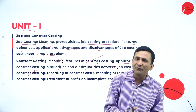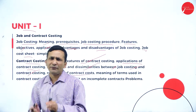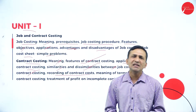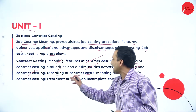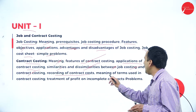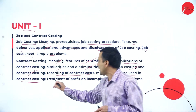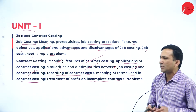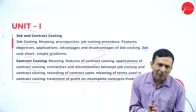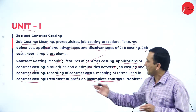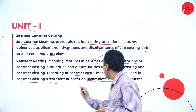The meaning and features of contract costing will be covered, its applications, and the similarities and dissimilarities between job costing and contract costing. Recording of contract costs is important for two-year, three-year, or five-year contracts. Key terms used in contract costing and the treatment of profit on incomplete contracts will also be addressed.